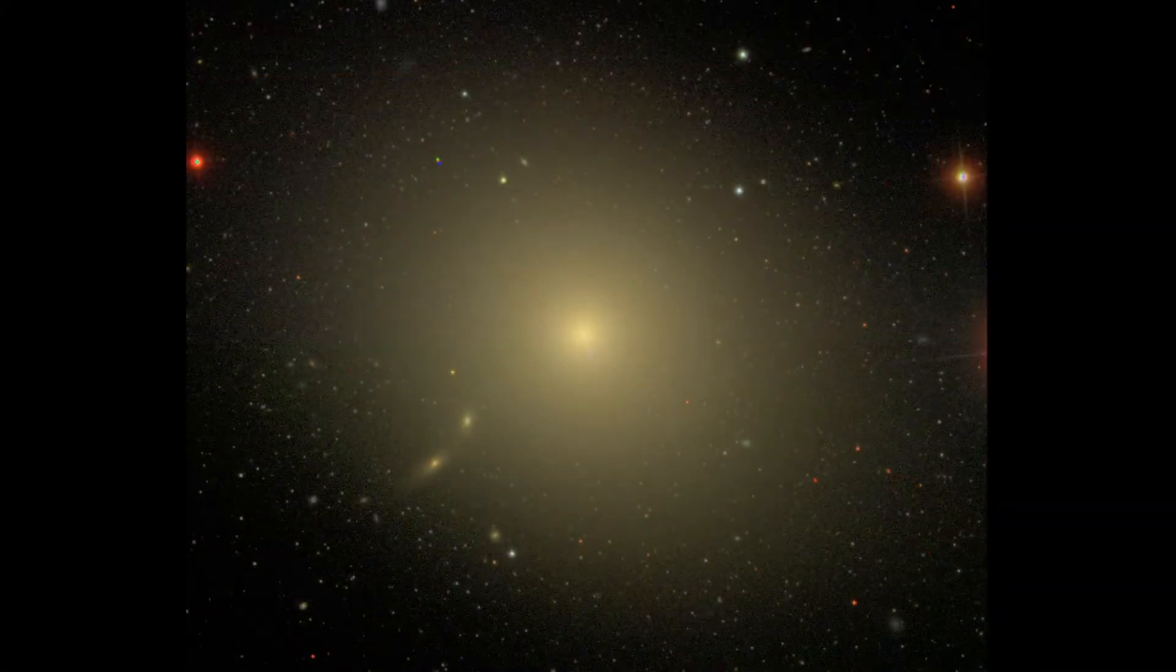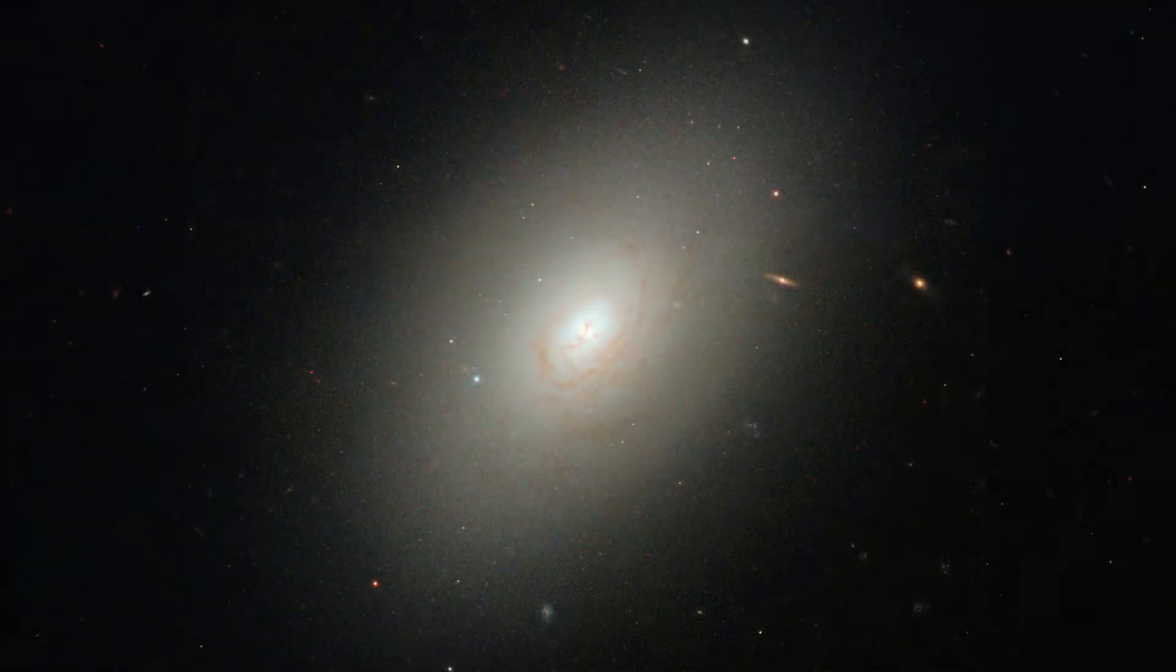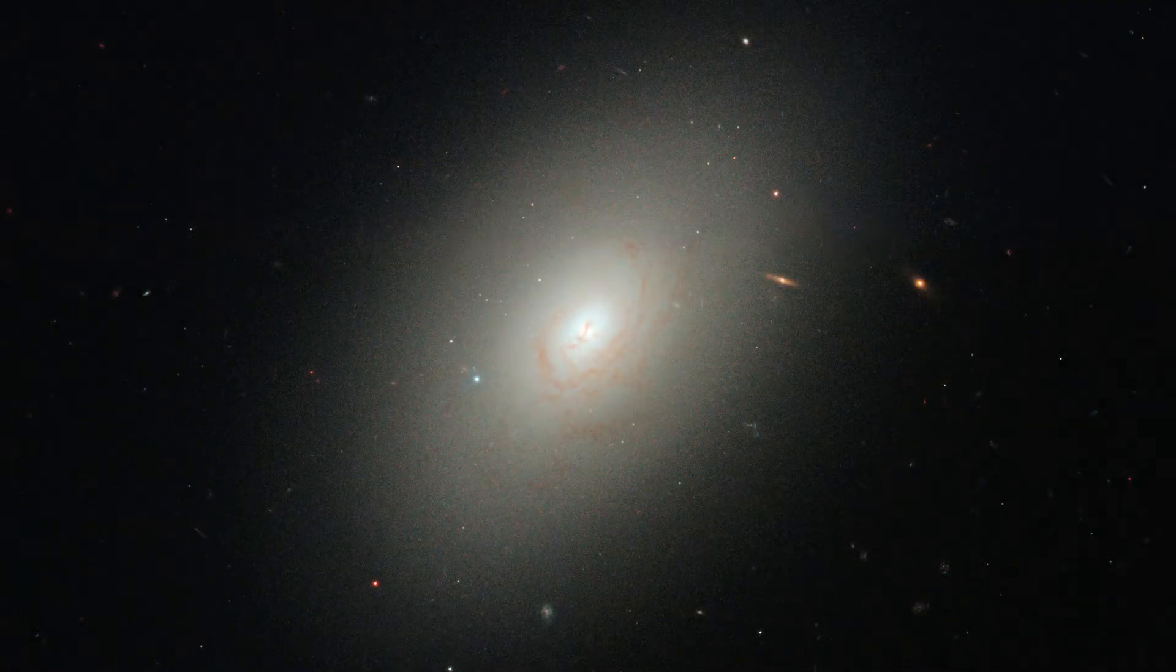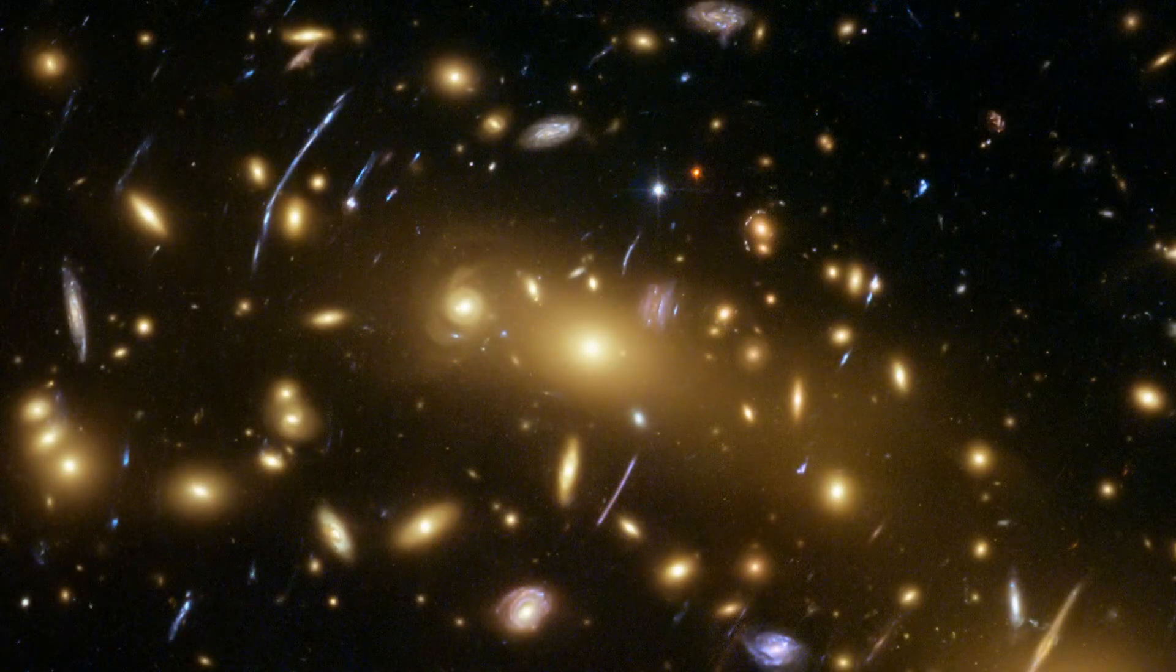Elliptical galaxies can appear roughly spherical, or they can be rather elongated. The largest galaxies in the universe are giant elliptical galaxies, found in the cores of large clusters of galaxies.